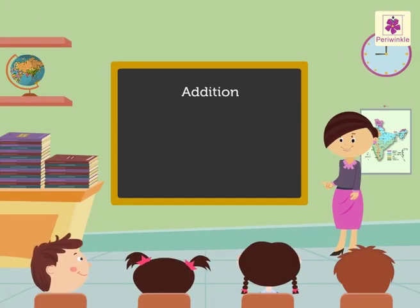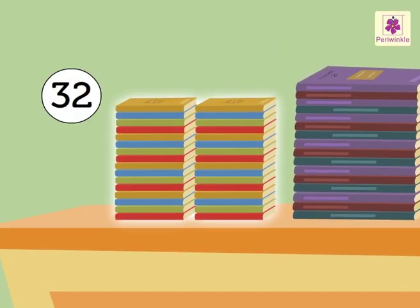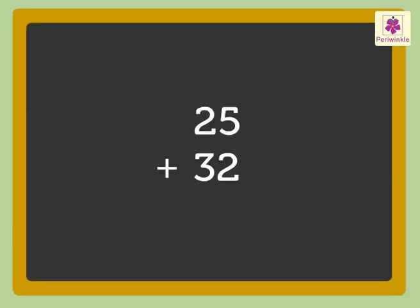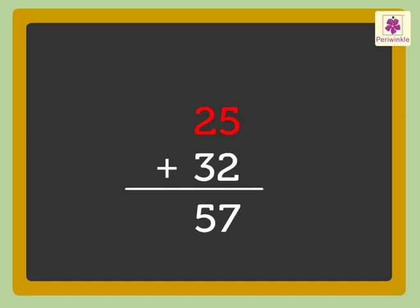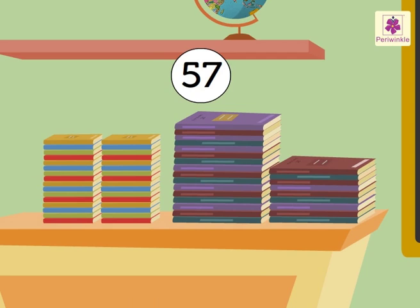Let us see how. There are 25 long books and 32 small books on the table. How many books are there in all? Let us add 25 and 32 to find the total number of books. 5 plus 2 is equal to 7. 2 plus 3 is equal to 5. Thus, the sum of 25 and 32 is 57. There are 57 books in all on the table.